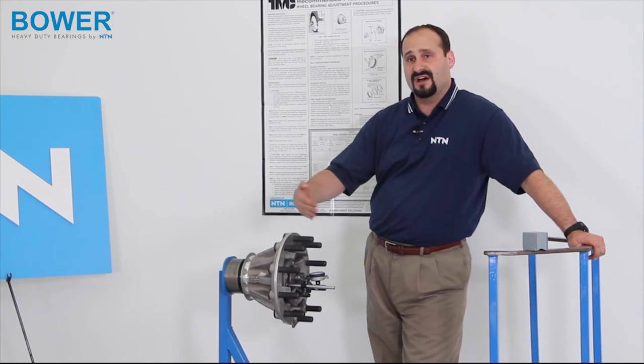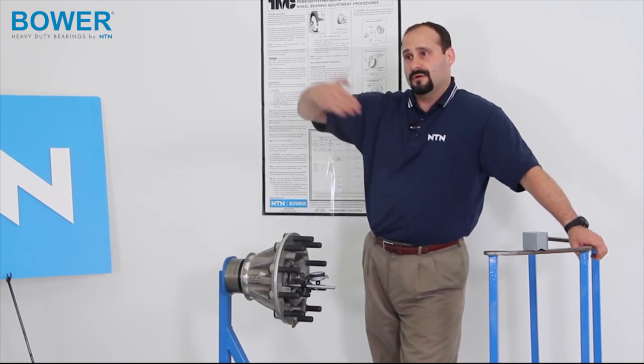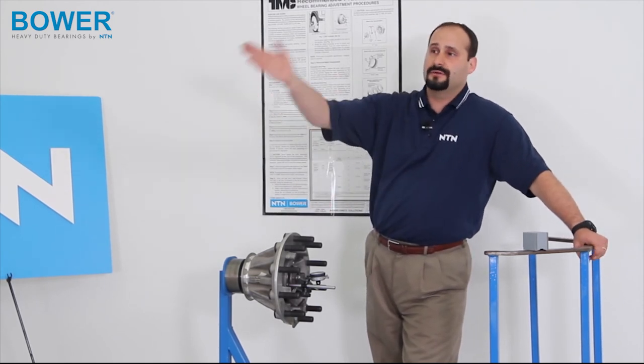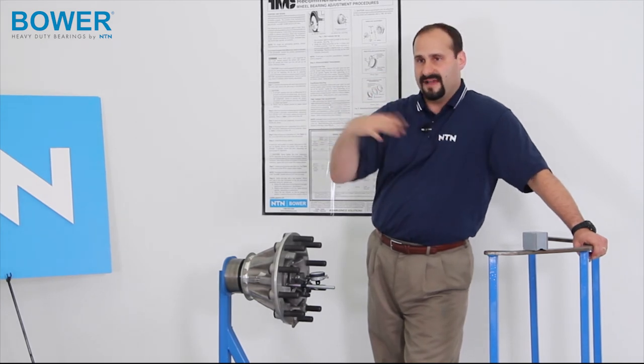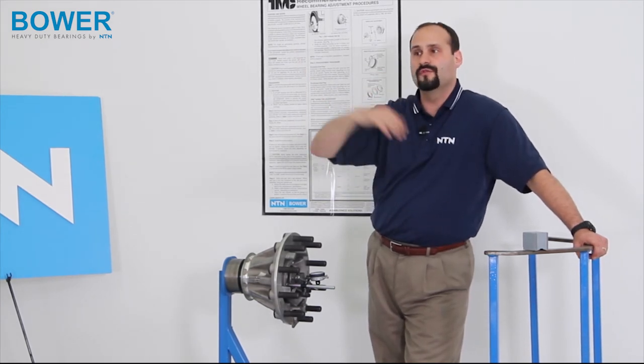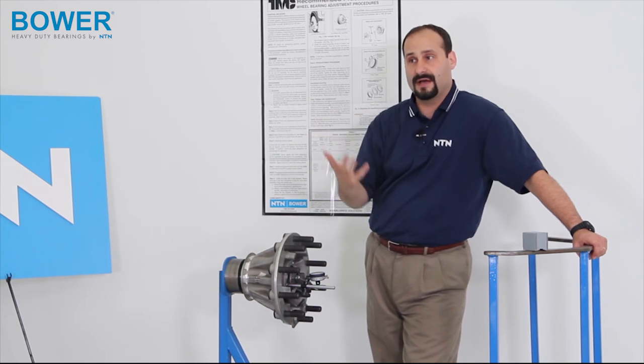What's important to note, if you set it off at the zero, say you go five one direction of the zero and three the other direction, it's not five minus three for two, it's total movement. So, it's five plus three for eight thousandth worth of end play.